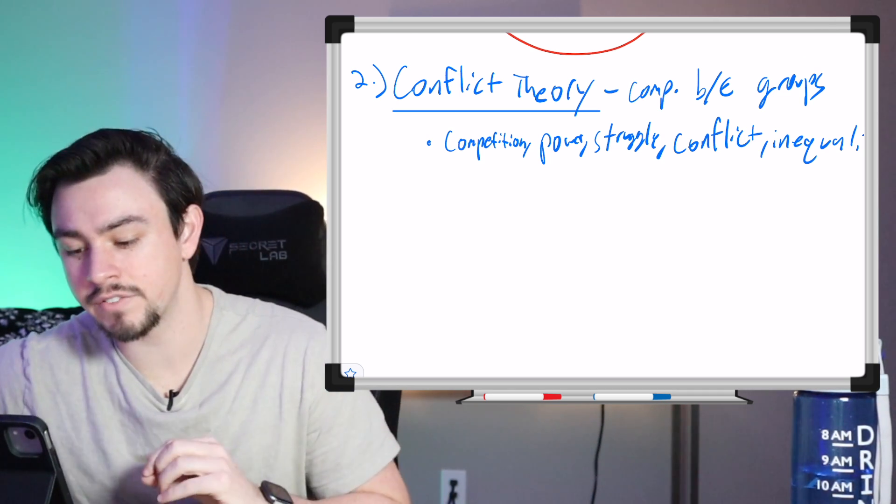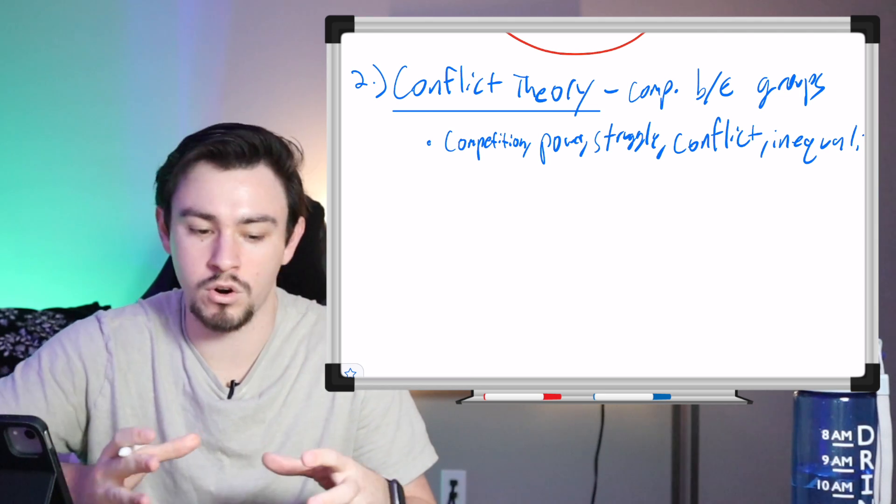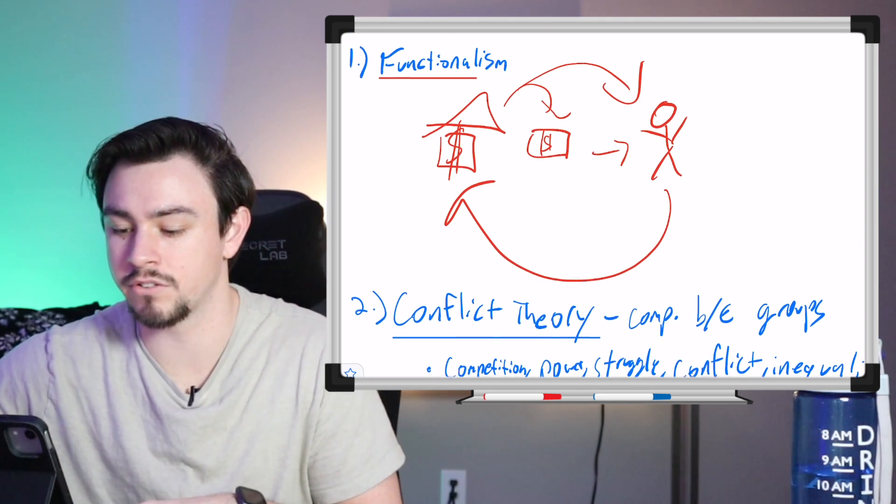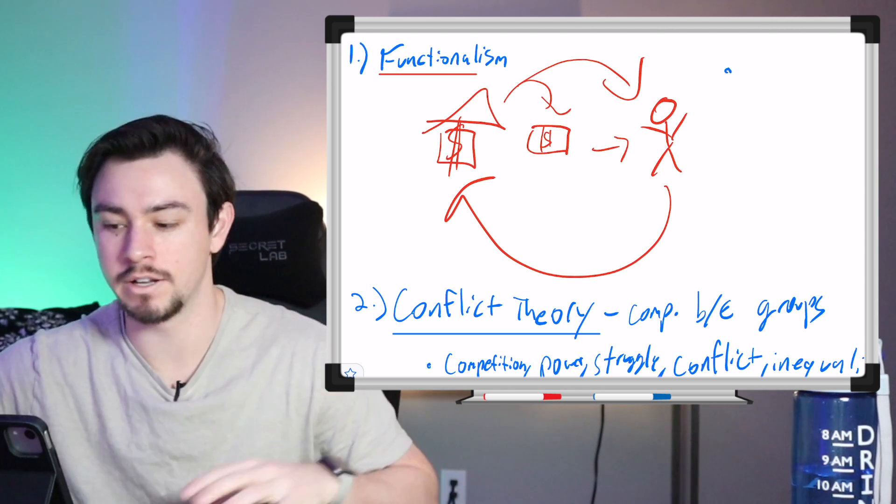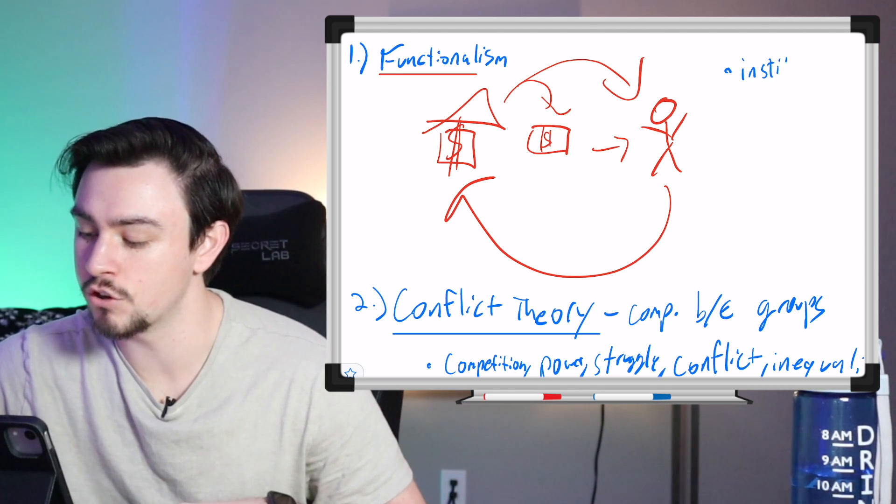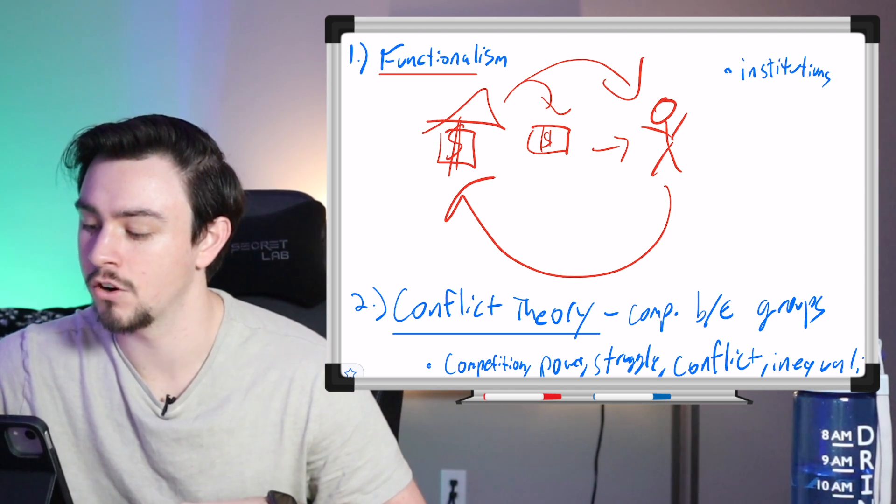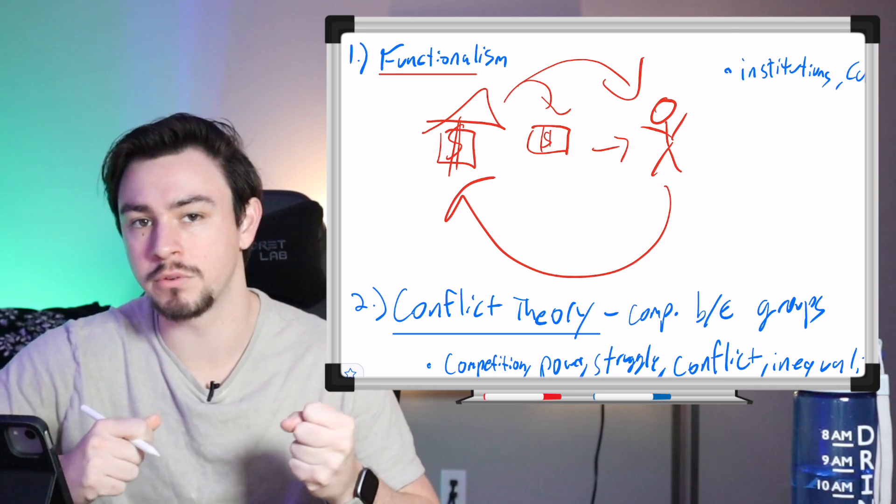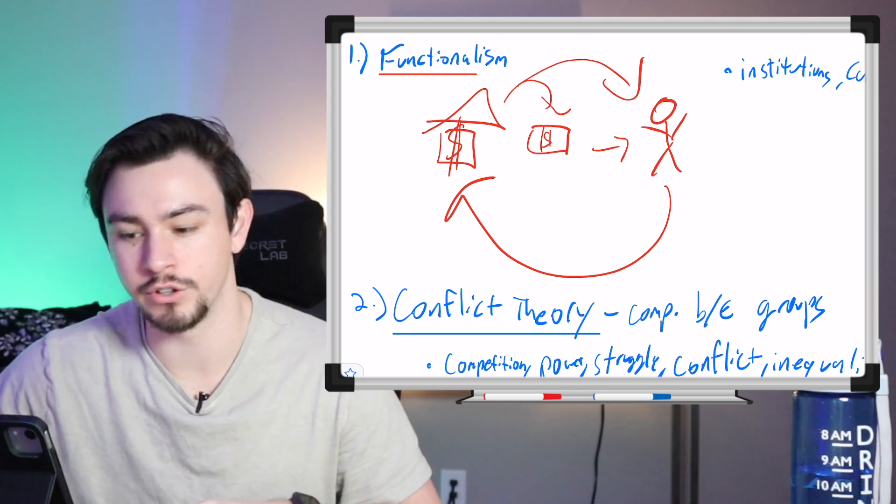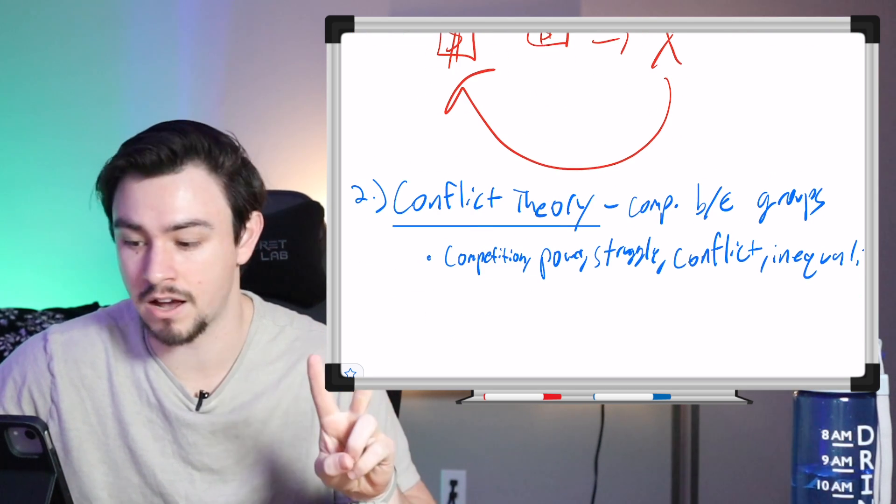So if you'll notice, conflict theory focuses a little bit more on the relationships between different groups, whereas something like functionalism, its keyword is going to be bigger. It's going to be talking about institutions or something like that, or maybe even full career paths. So almost like this exchange of functional goods. So that's functionalism, and that's conflict theory.